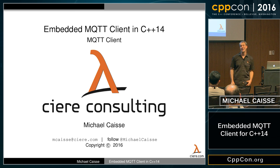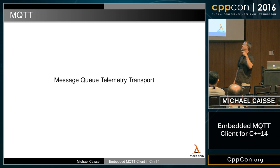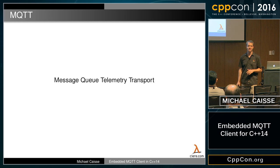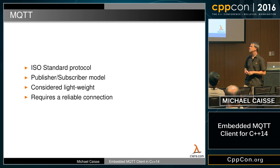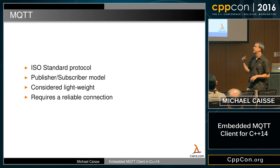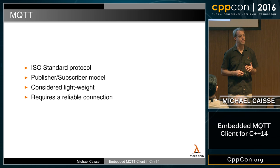MQTT used to mean Message Queue Telemetry Transport, but nobody actually uses that full name anymore — they just call it MQTT. It is an ISO standard. It basically is a publish-subscribe type model and it's considered lightweight. It does require a reliable connection; that's one of the things it depends upon — whatever this connection is must be reliable.